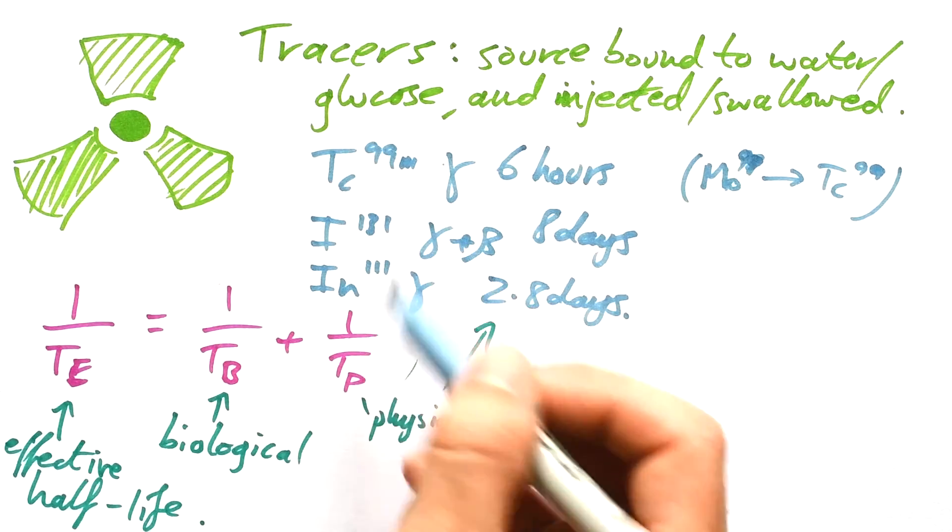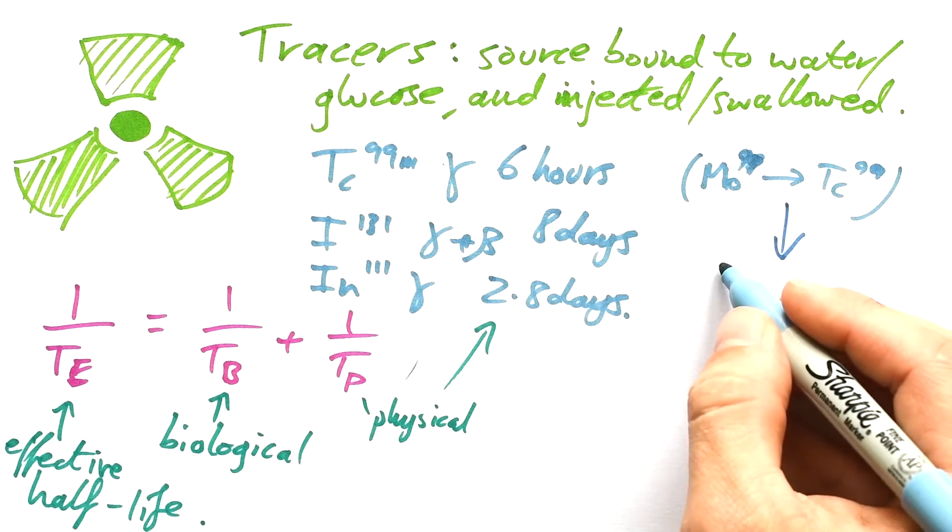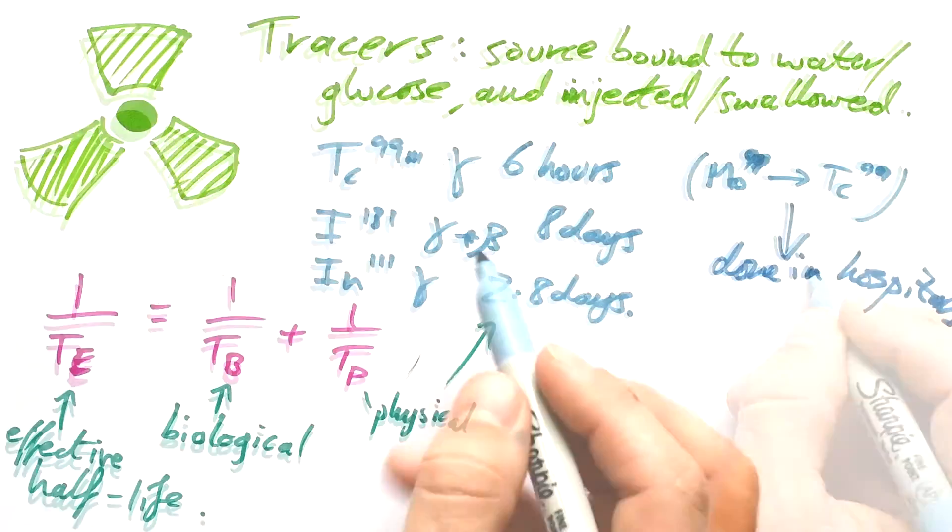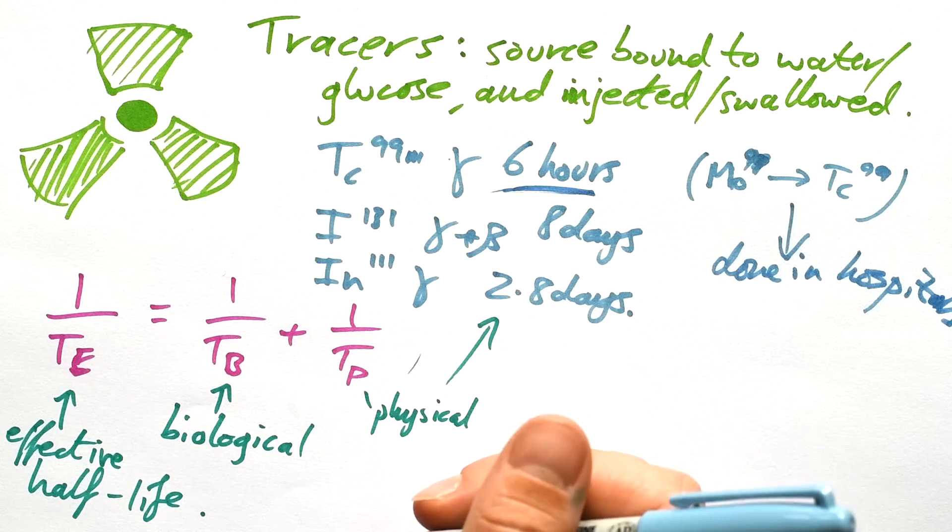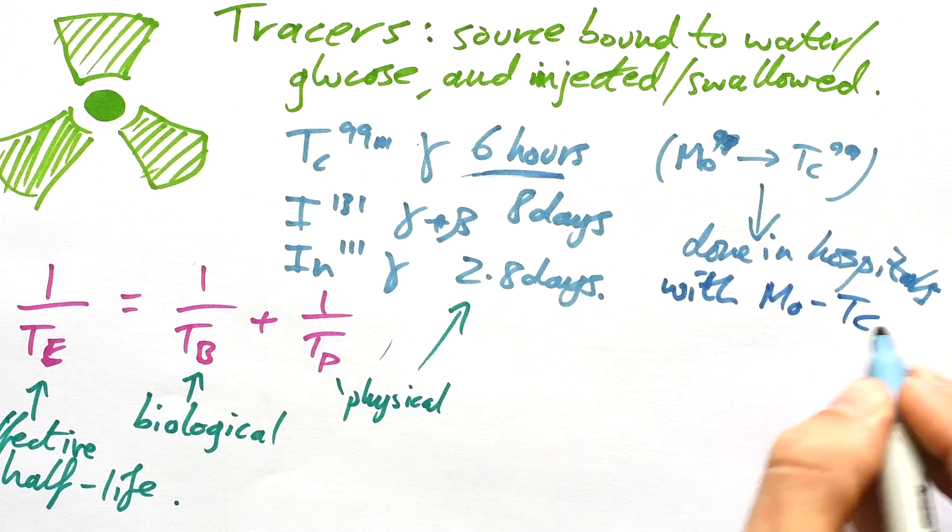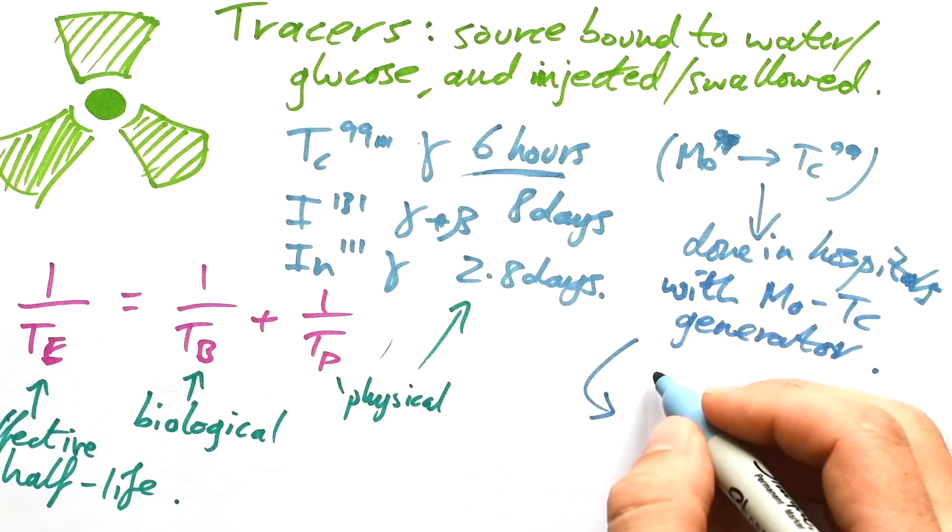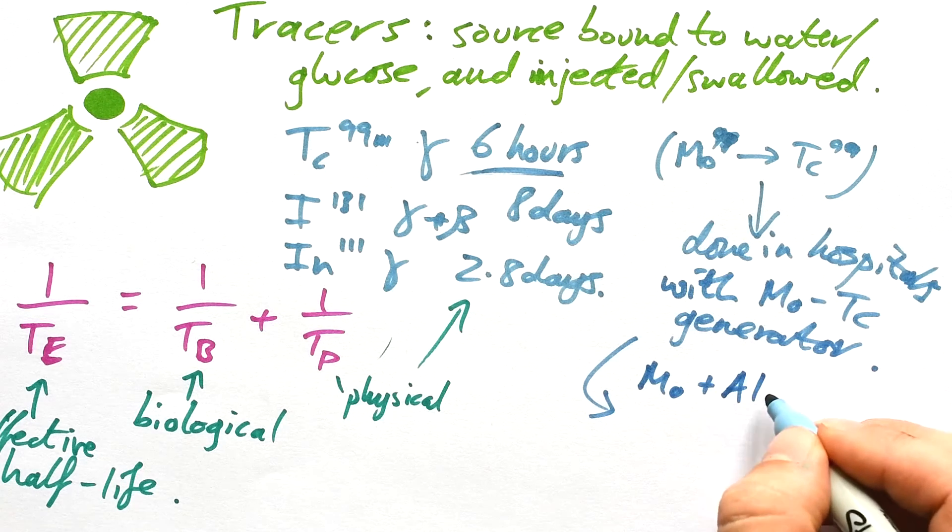Now, because technetium has a very, very short half-life, this process needs to be done in hospitals, because you're never going to get it somewhere in six hours. It's not going to be much use anyway. So we do this with a molybdenum technetium generator. How does that work? Well, we take molybdenum and we combine it with aluminium oxide.